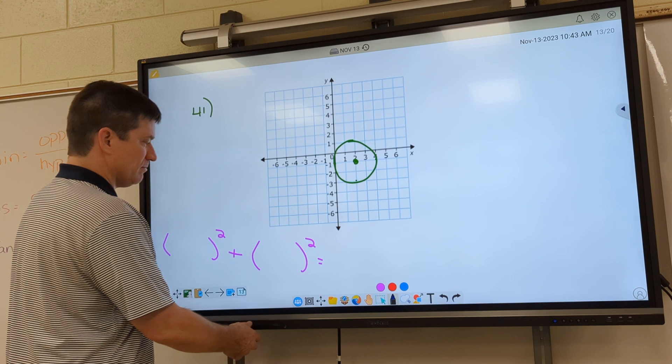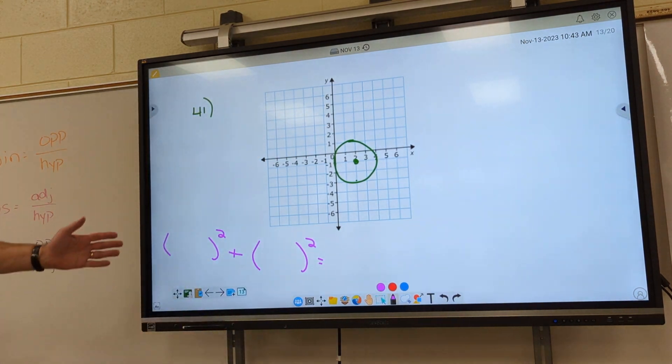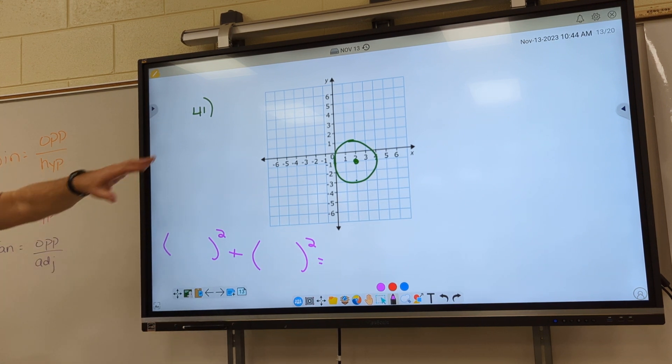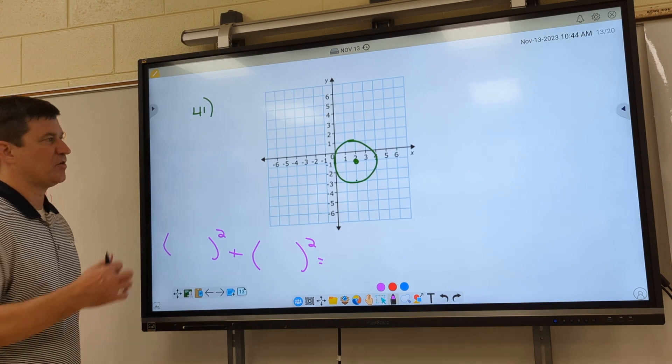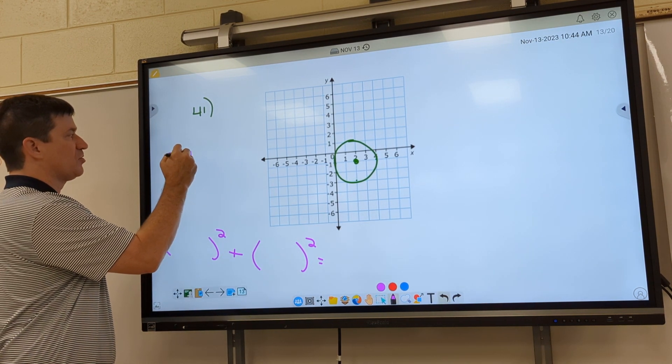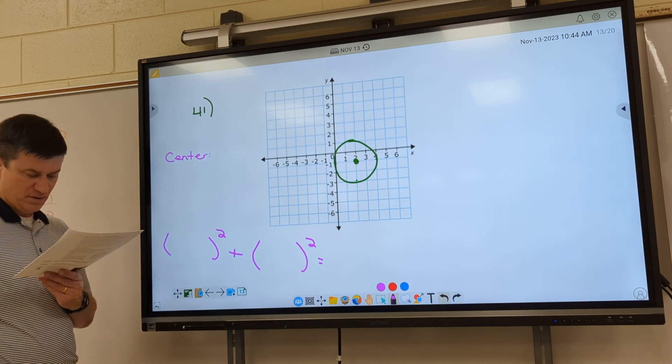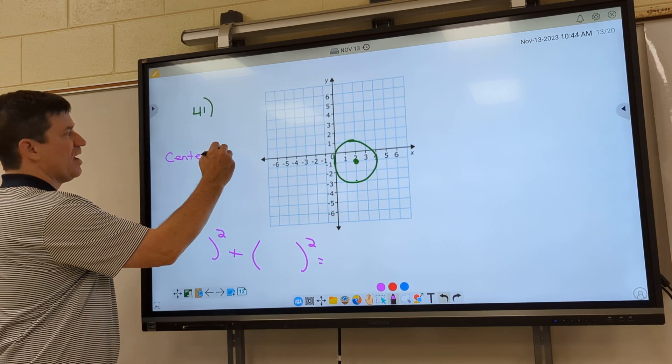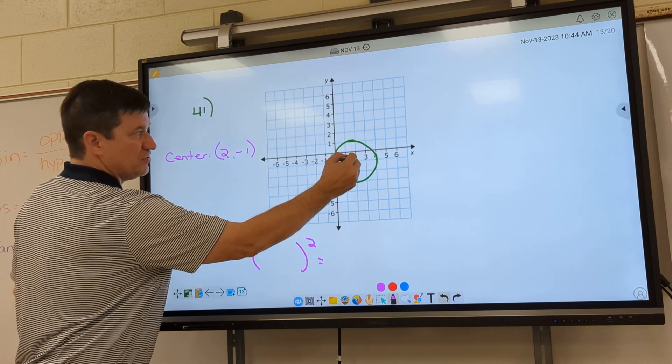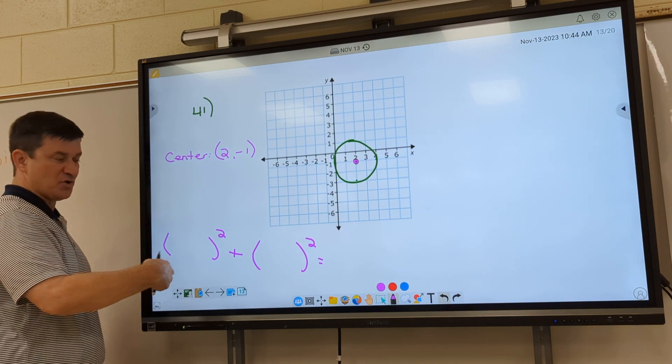All right, look at 41. All you got to do is look at it and just write an answer, guys. Not a lot of work to show. You don't have to draw the graph or anything. 41 says, write an equation of the graph. Well, before we write an equation, we've got to know what the center of the circle is. Can you guys look on the graph and find the center? 2, negative 1. Over 2, down 1. Y'all see that? Y'all agree? Over 2, down 1 is my center.